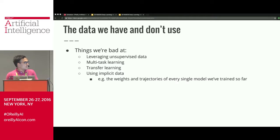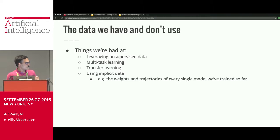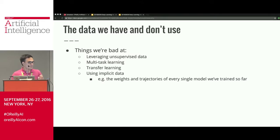In addition to the data we use, there's the data we don't use, which is even worse. We are currently really bad at leveraging unsupervised data — data from the same distribution as our problem but without the labels we care about. There's also multi-task learning, where you have many different tasks on similar data and the hope is that by doing them all together you can leverage shared structure and have an effectively larger dataset than any individual task.